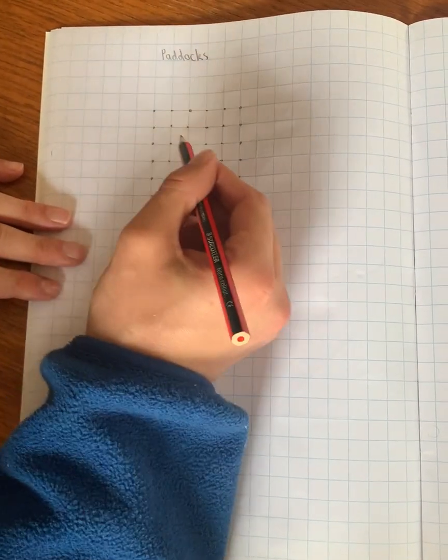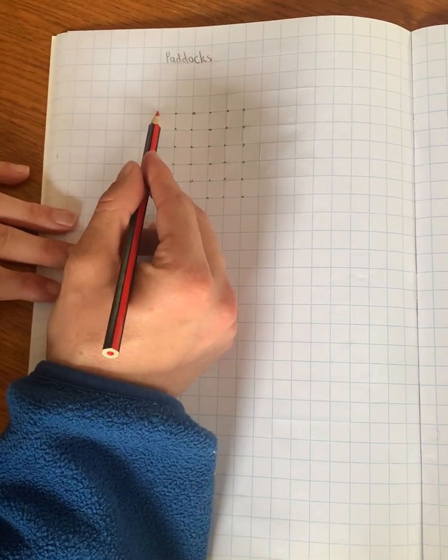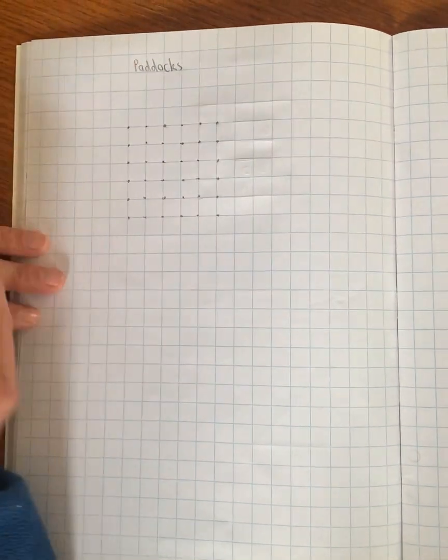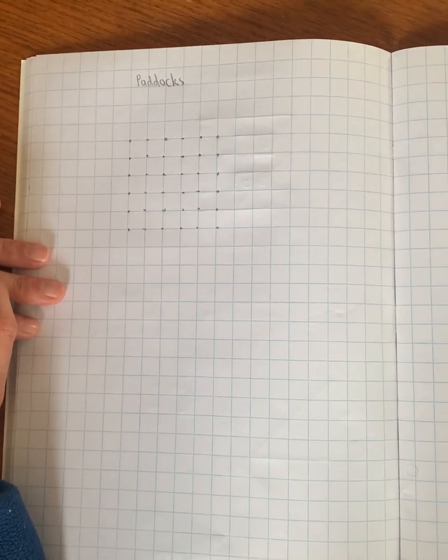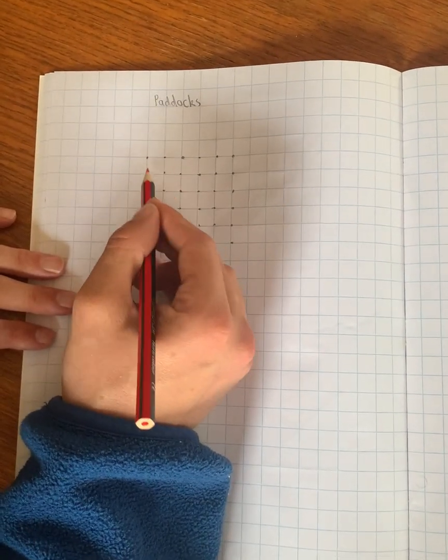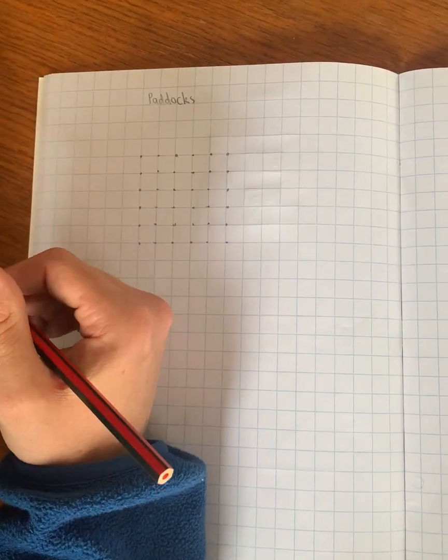And we join the two dots along the line. Not allowed to join diagonal like that. You've got to join along the line, down or across. And the winner is the person that makes the most boxes, but it doesn't have to have your color all the way around. It just has to be a complete box.